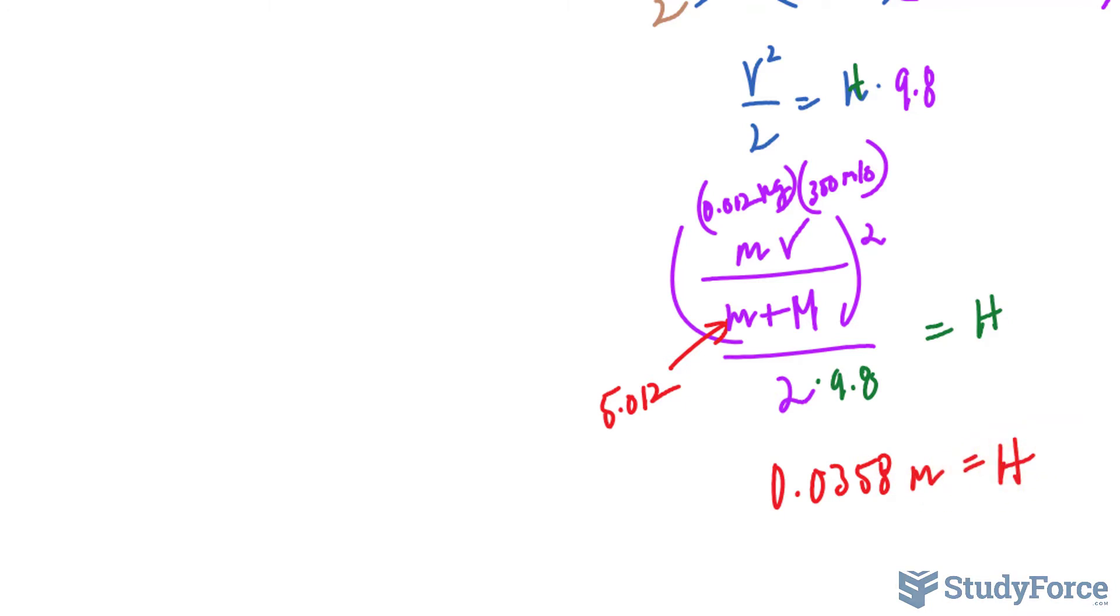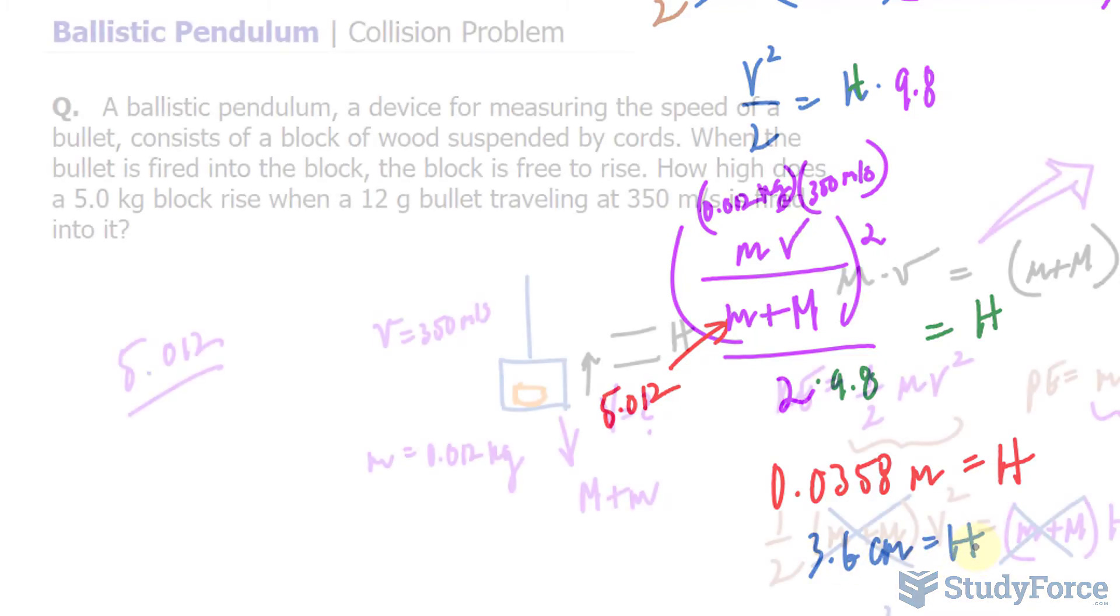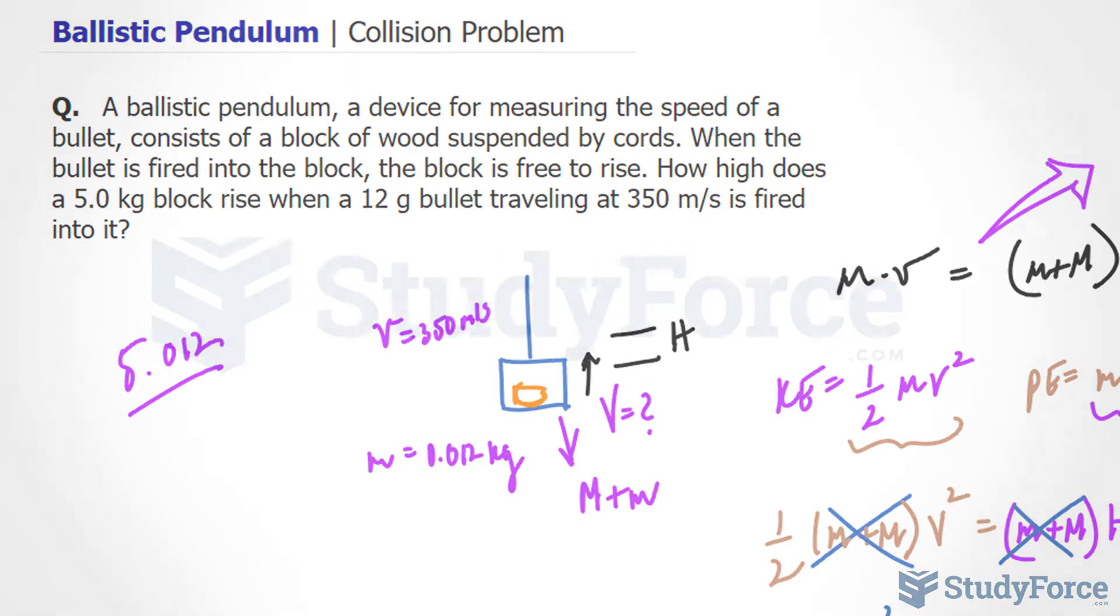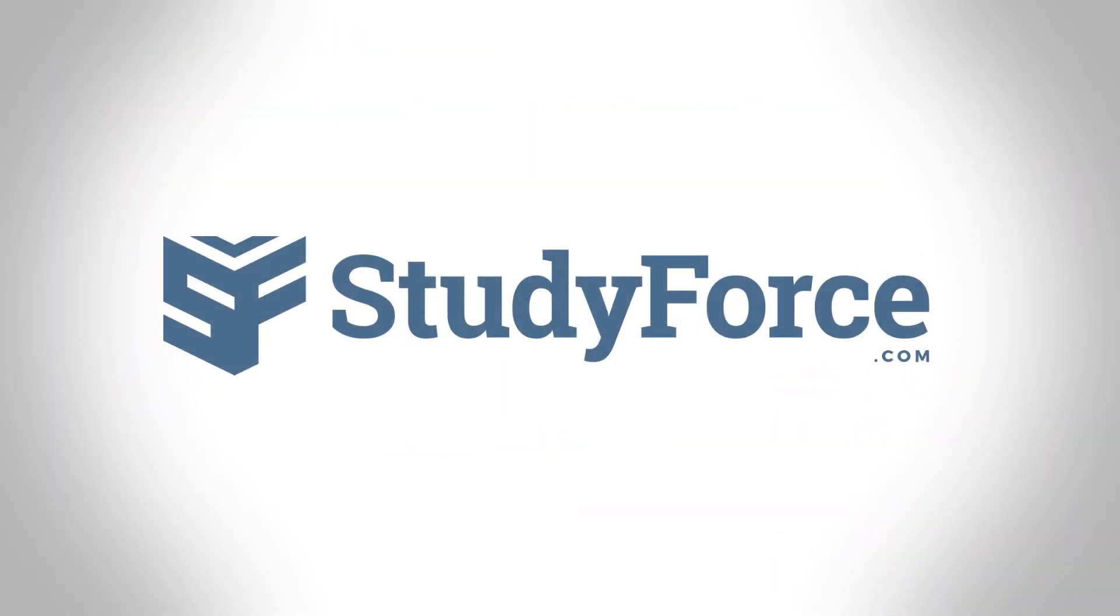Converting this into centimeters makes it 3.6 centimeters high. And there you have it. That is how to solve an inelastic collision problem involving ballistic pendulums.